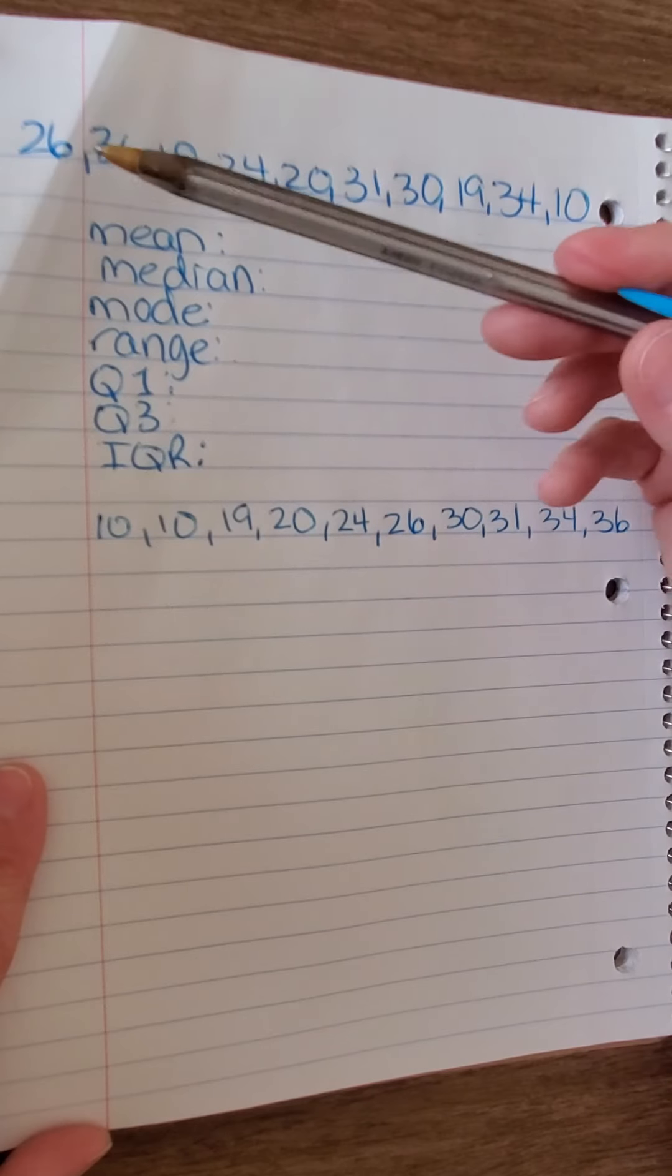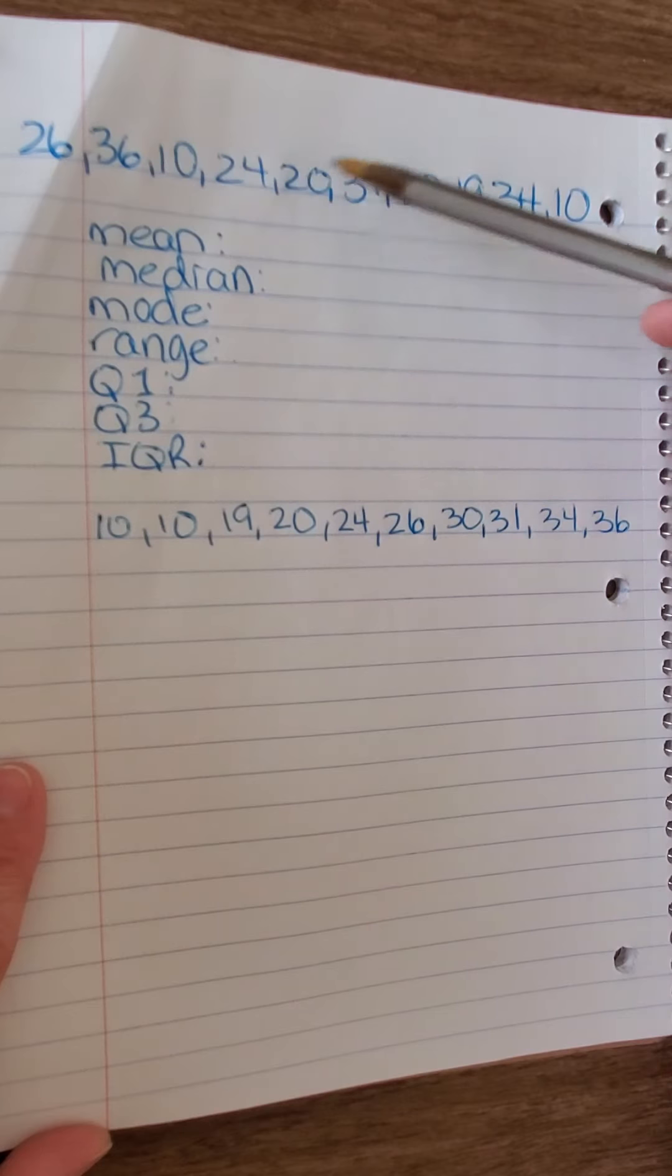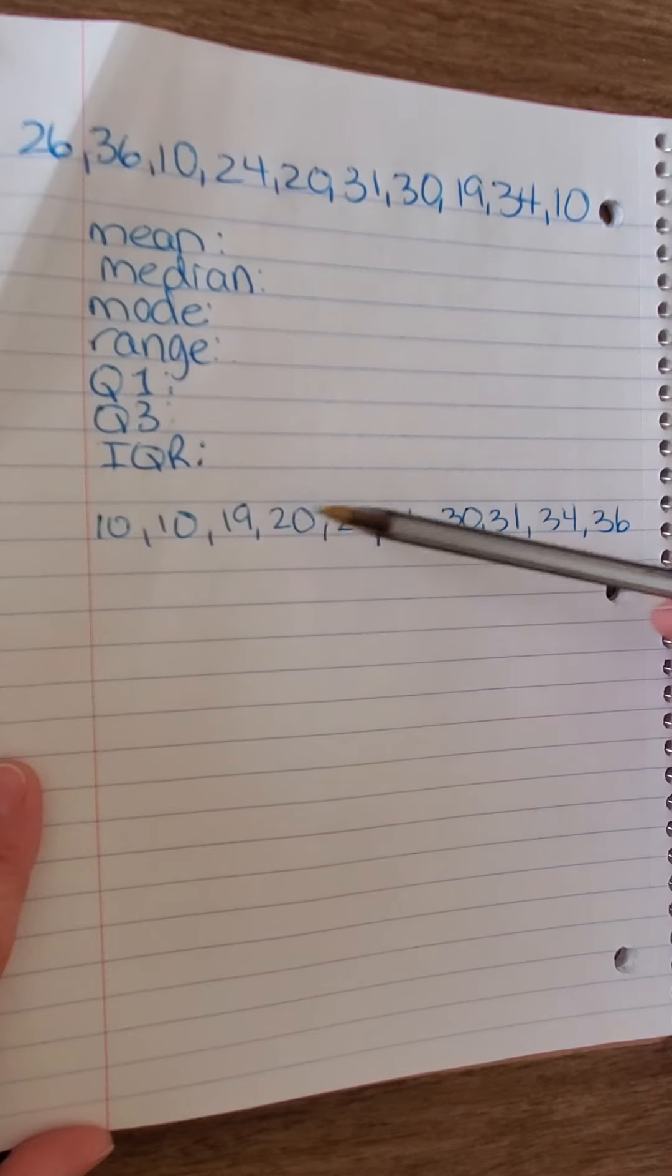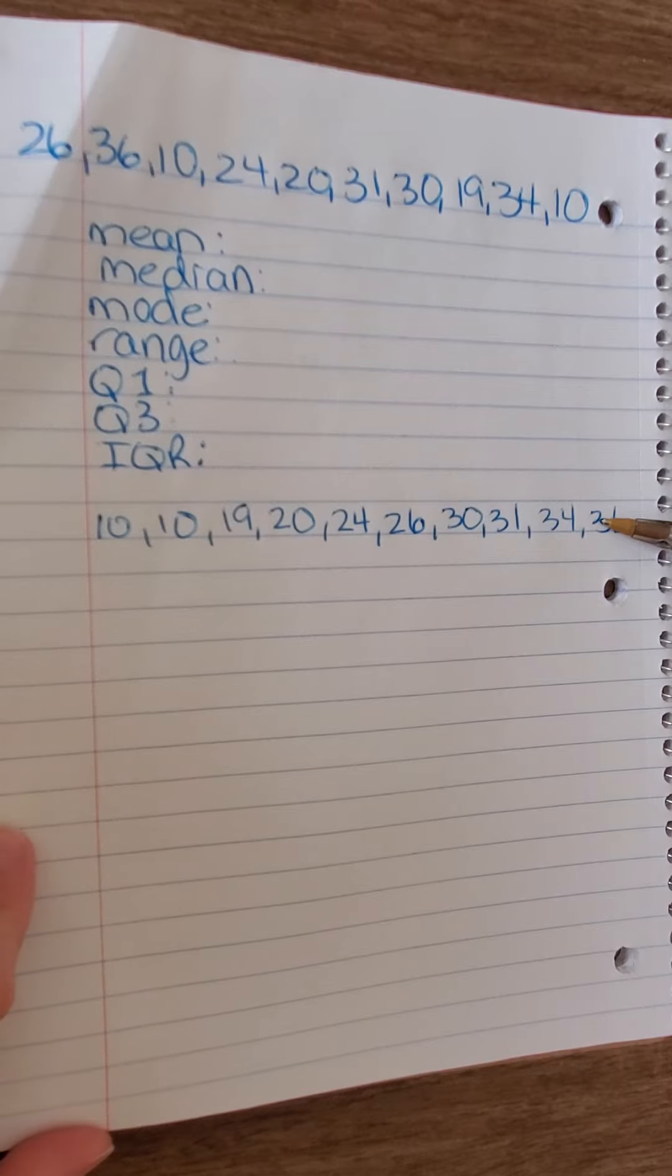I'm going to double check. I had 1, 2, 3, 4, 5, 6, 7, 8, 9, 10 numbers when I started. 1, 2, 3, 4, 5, 6, 7, 8, 9, 10. And I have all 10 numbers down here.